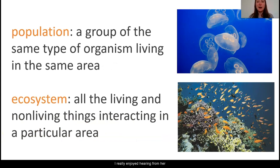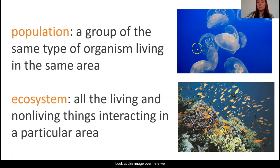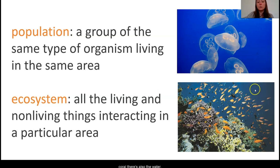Wow, I really enjoyed hearing from her about what she loves to study in the moon jelly population. It seems really cool that she gets to work outside but also gets to study science in the lab. As she was giving us information about what she studies, I heard her use the word population. What she means here is a group of organisms that are the same type living in the same area. If we take a look at this image, we can see many, many moon jellies all in one area together. She also mentioned something called an ecosystem — this is all of the living things and non-living things in a particular area. We can see many different types of fish, plants and coral, and the water. All of these things interact with one another and have an effect on each other.